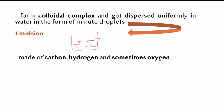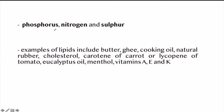Lipids are basically made up of carbon, hydrogen, and sometimes oxygen, in which the content of oxygen is always small compared to hydrogen and carbon. Many lipids contain small amounts of additional elements like phosphorus, nitrogen, and sulfur. Common examples of lipids include butter, ghee, cooking oil, natural rubber, cholesterol, carotene of carrot, lycopene of tomato, eucalyptus oil, menthol, and vitamins A, E, and K.